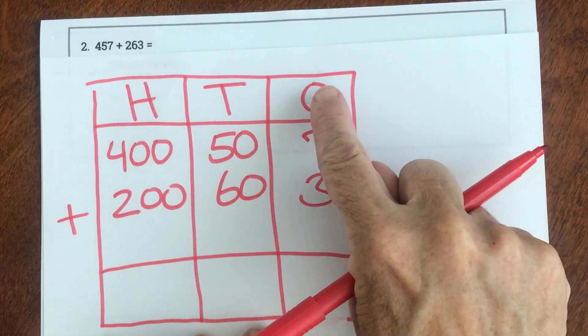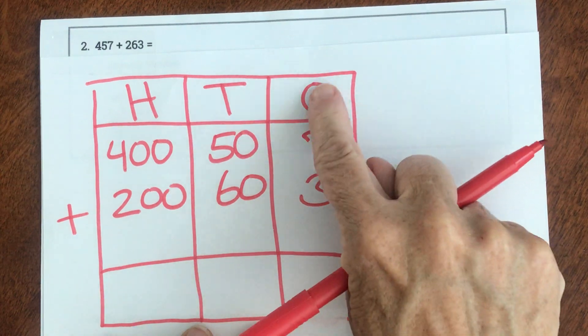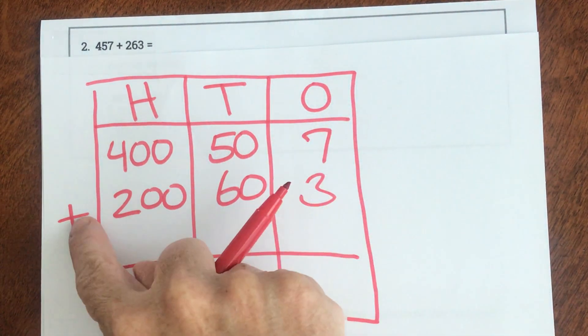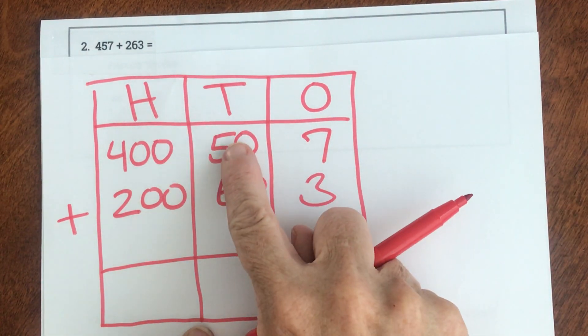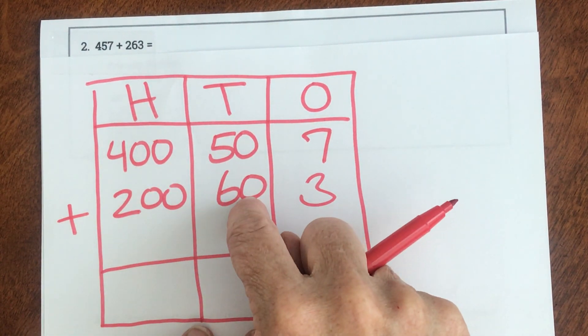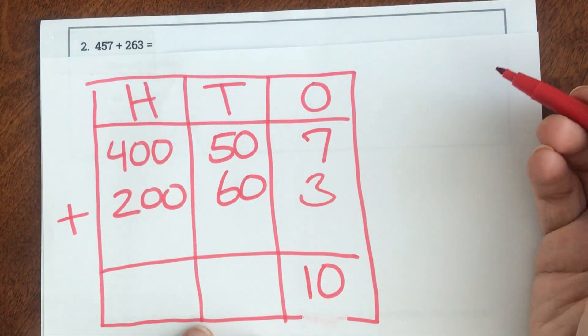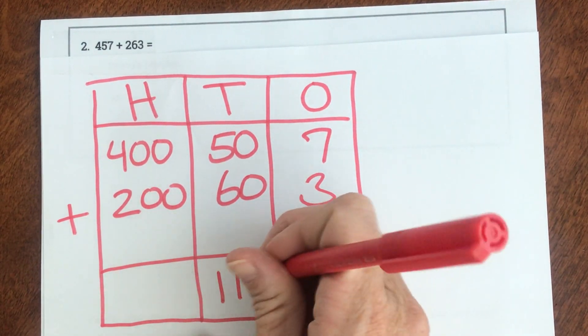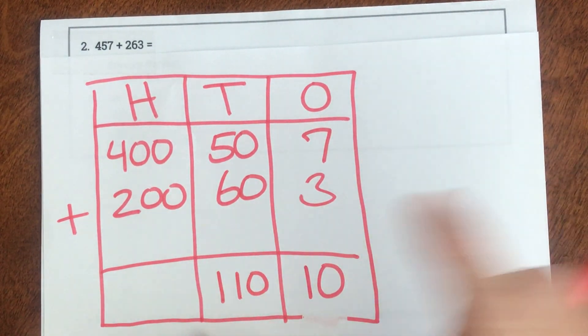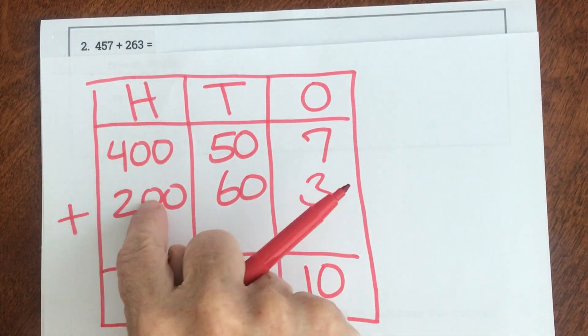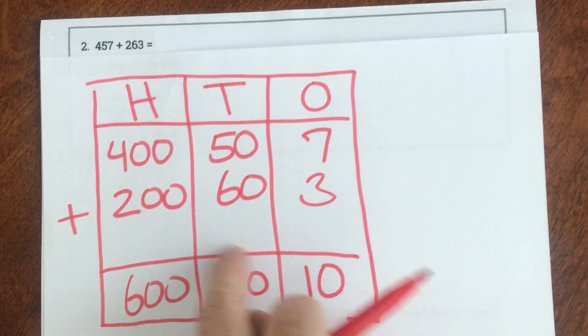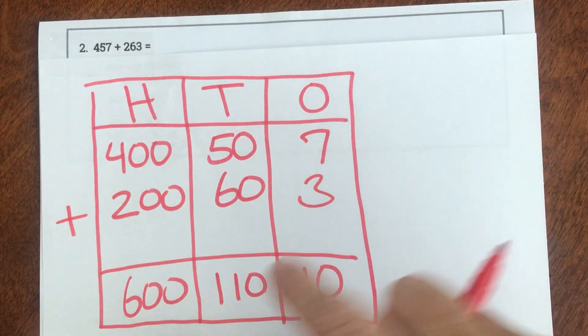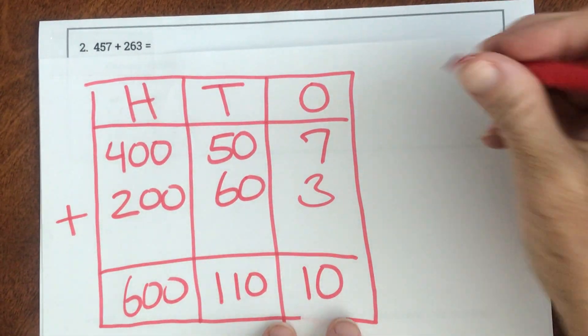Now step two says add your ones. So 7 + 3 is 10. 50 + 60, well, I know 50 and 50 is 100, and then 10 more would be 110. And then 400 + 200 is 600. So that was step two, three, four. Now my final step is I'm going to add this in working form.